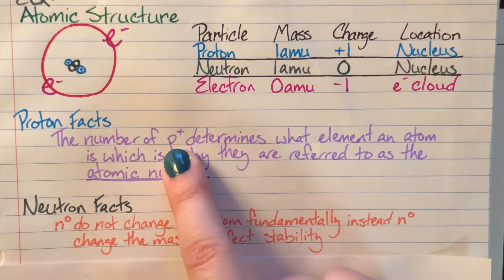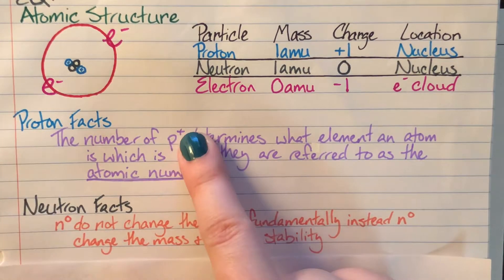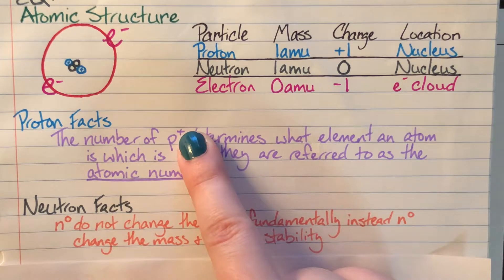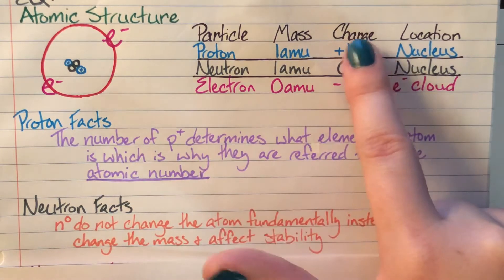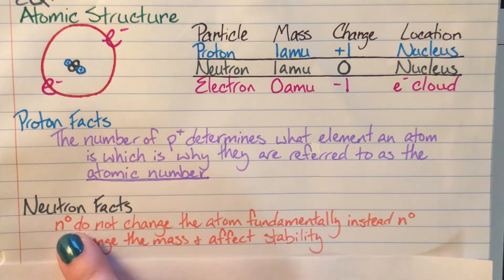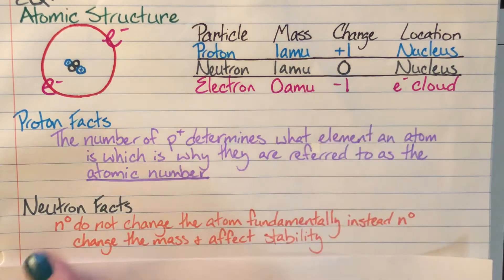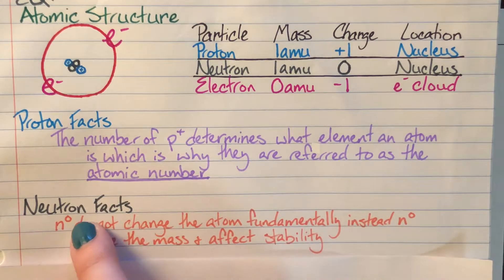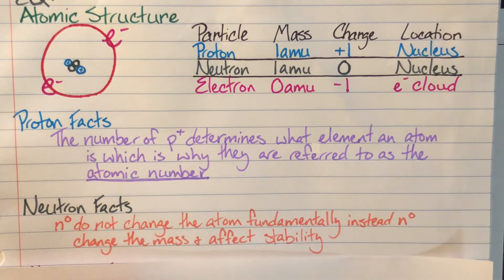And so we have a P, P for proton, and then we have a floating plus. That's to help you remember that protons have a charge of plus one. Neutrons, we follow the same format, but neutrons don't have a charge. So neutrons are going to go ahead and have a little zero floating there. It's called the N-not.